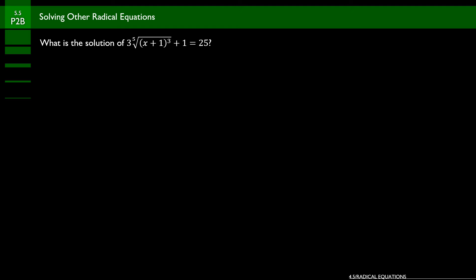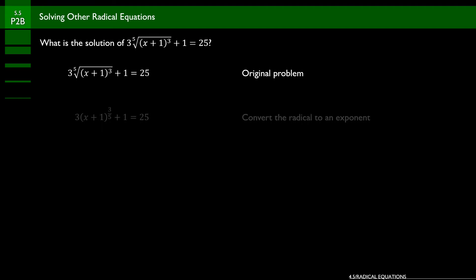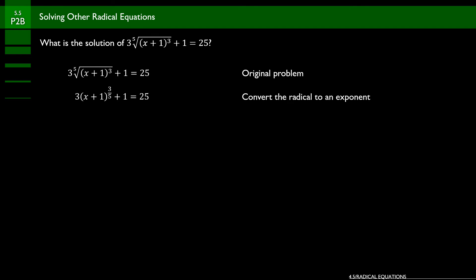For problem 2b, the equation is 3 times the 5th root of x plus 1 cubed, plus 1 equals 25. The first step is to take the index of 5 and move it underneath the exponent in the radicand — so instead of the 5th root of x plus 1 cubed, we write x plus 1 to the 3/5. Our new equation is 3 times the quantity x plus 1 to the 3/5, plus 1 equals 25. Subtract 1 from both sides, then divide by 3, leaving the quantity x plus 1 to the 3/5 equals 8.